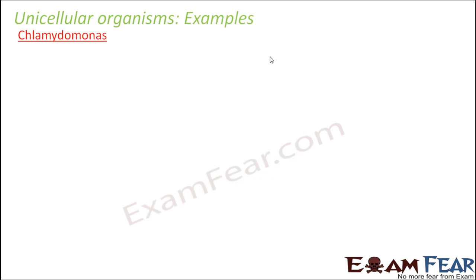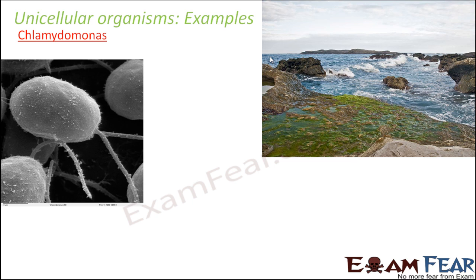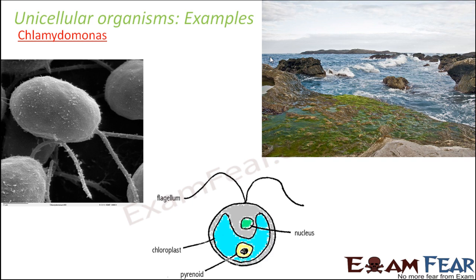The cell has a changing shape. The next example is Chlamydomonas, which is a green algae. You would generally have seen algae on the surface of water — you often see a green layer formed on water, and that is algae. Chlamydomonas is an example of such algae, which is again unicellular, made of one cell. Inside this single cell, you have a nucleus, a chloroplast, and flagella for movement.